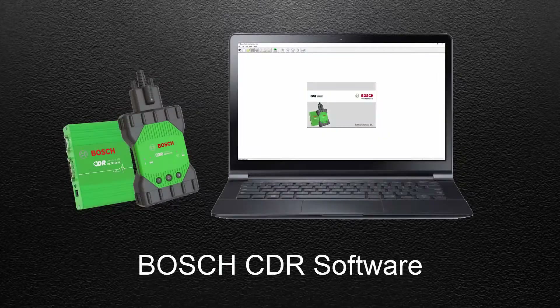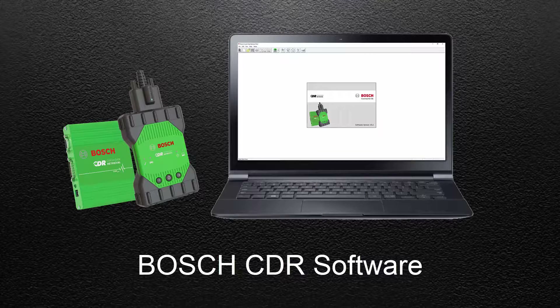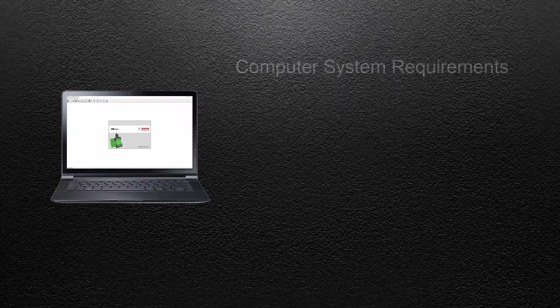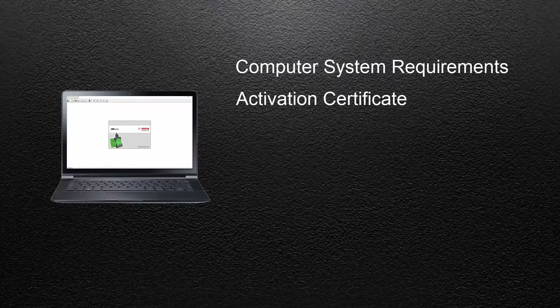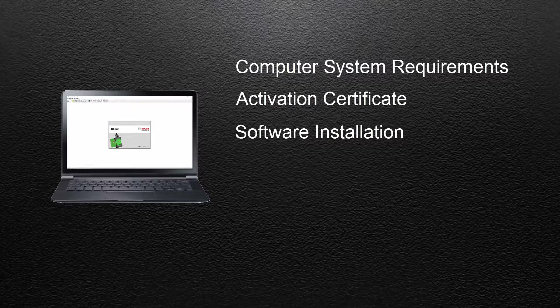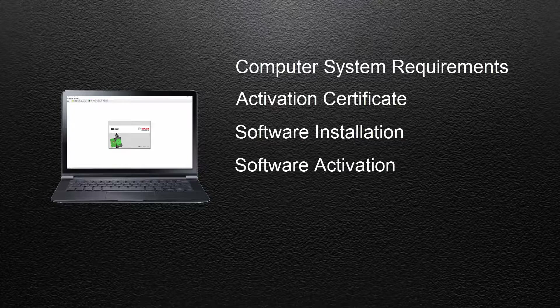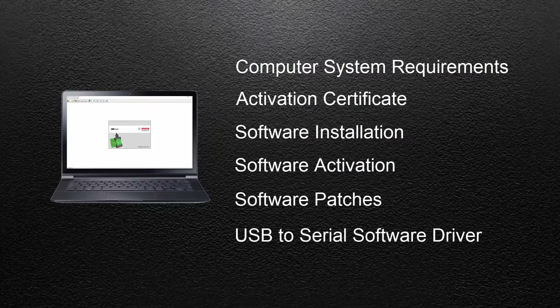An important component of the Bosch CDR tool is the software you install and activate on your computer. Installing and activating the software takes just a few minutes. In this video, we'll go over computer system requirements needed to run the CDR software program, the CDR software activation certificate, how to download and install the CDR software program, how to activate the software using the activation certificate, CDR software patches, and how to download and install the USB to serial software driver.